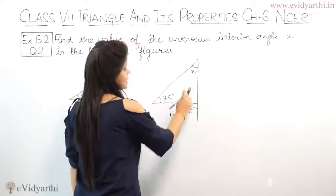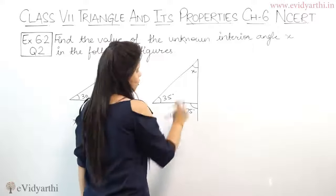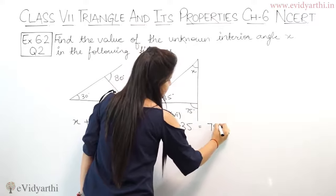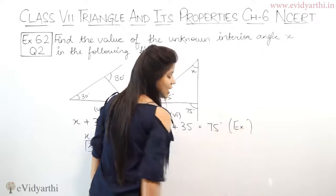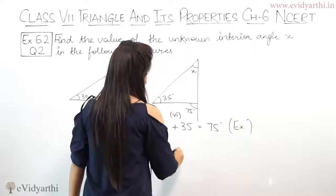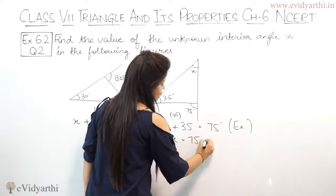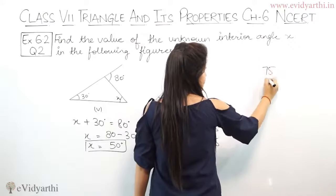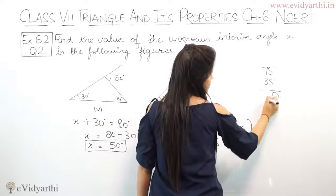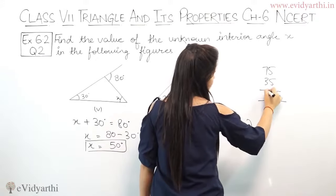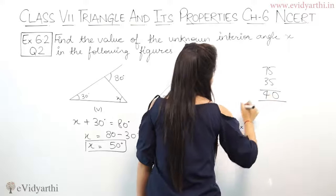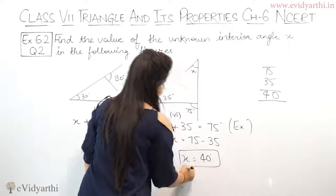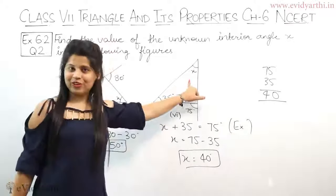Coming to the sixth part, same thing. This exterior angle and its two opposite angles, that is x plus 35 equals 75 degrees. Again, the reason being exterior angle property. Then x equals 75 minus 35. Let's subtract: 75 minus 35, 5 minus 5 is 0, 7 minus 3 is 4. So x equals 40 degrees. Angle x is 40 degrees.